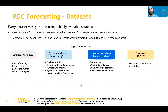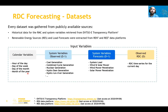For data sources, we used only publicly available information. Historical data for residual market curves and system variables were retrieved from the ENTSO-E transparency platform. Renewable energy sources and load forecasts were extracted from both TSOs — Red Eléctrica de España and REN. The input variables consist of four sets: calendar variables to model seasonality, system variables in both observed and forecast shapes, and the observed residual demand curves for today used while predicting tomorrow's curve.